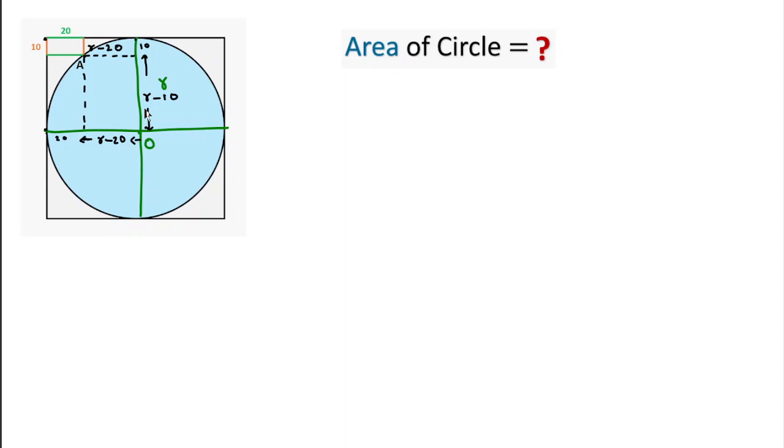If we connect from this to this, this is 90 degrees, so this is a right angle triangle and this is a radius R. Using Pythagorean theorem, we can write R squared equals (R minus 20) squared plus (R minus 10) squared.